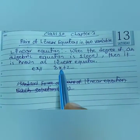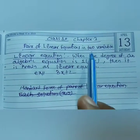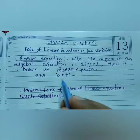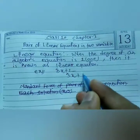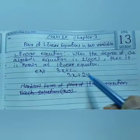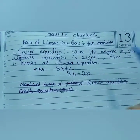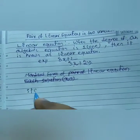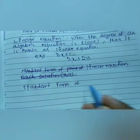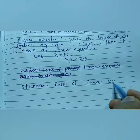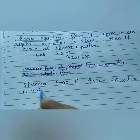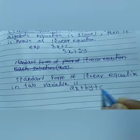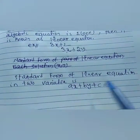An example is 3x plus 2 — the degree of the equation is 1, so it is known as linear. But our chapter name says 'pair of linear equation in two variables,' so here we have two variables. For example, 3x plus 2y gives us two variables. 'Pair' means we take two equations. The standard form of a linear equation in two variables is ax plus by plus c equals to 0.